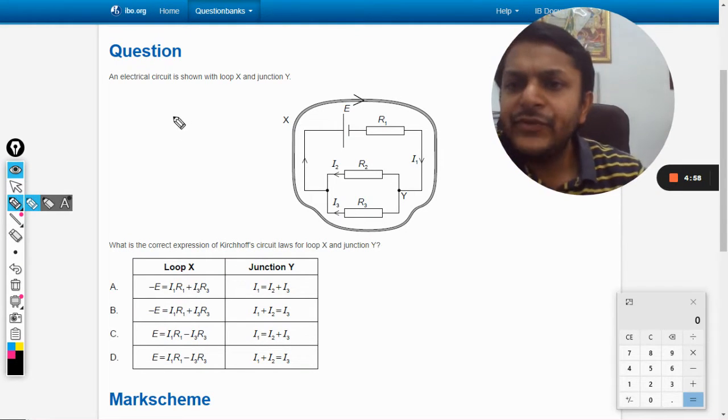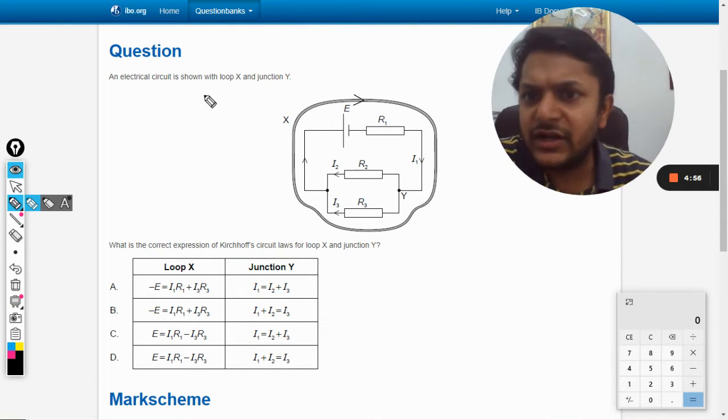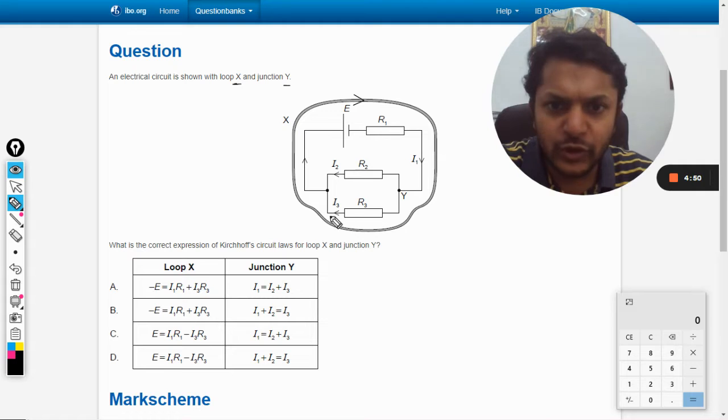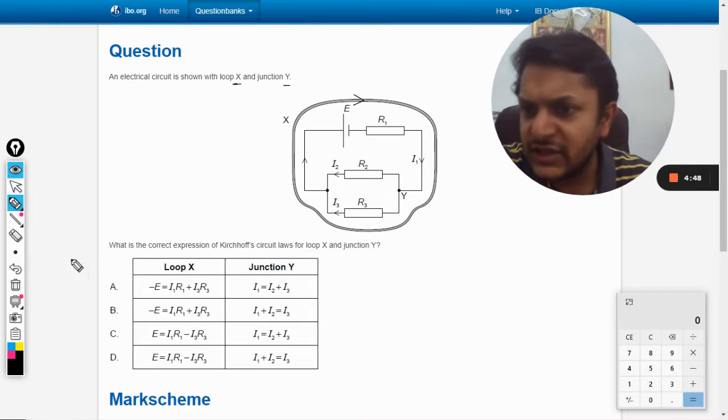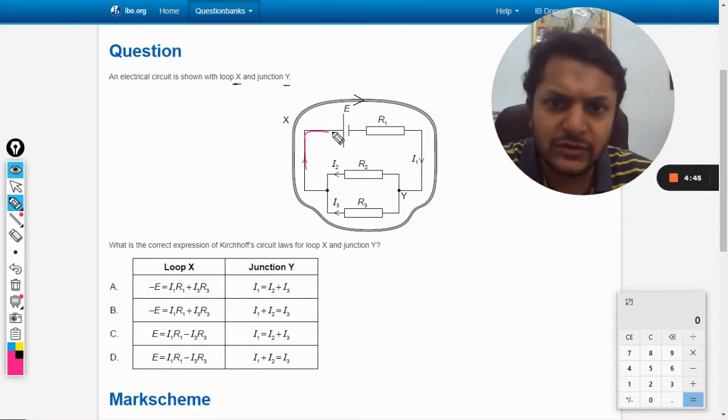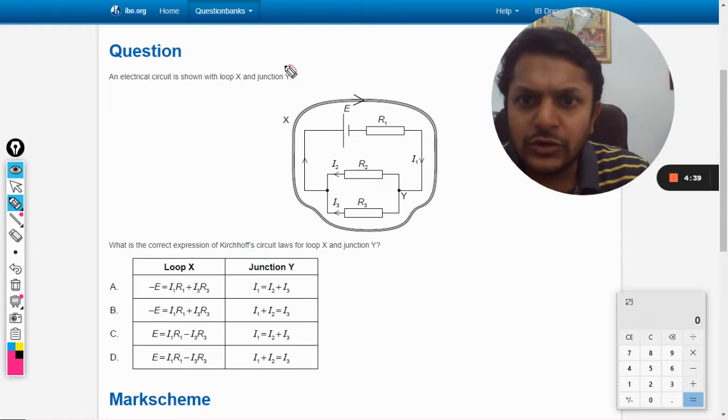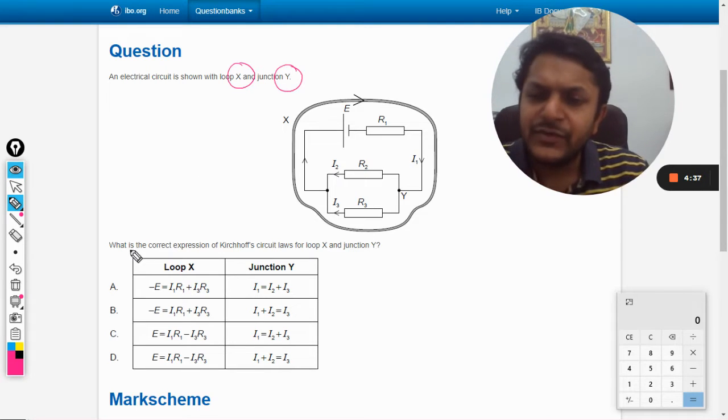Okay, in this question an electrical circuit is shown with loop X and junction Y. This is the loop that is shown, going from the external resistance. Let me show the loop in my way - the loop is like this. So, junction Y and loop X - what is the correct expression for Kirchhoff's circuit law?